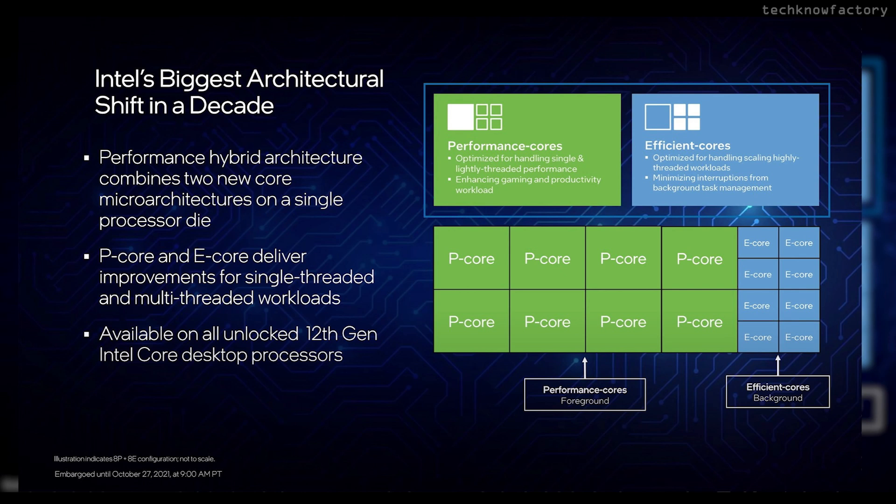The small Efficiency cores, or E-cores, handle background tasks — for example antivirus updates or Windows background processes. So we have P-cores for heavy tasks and E-cores for lighter, smaller tasks.